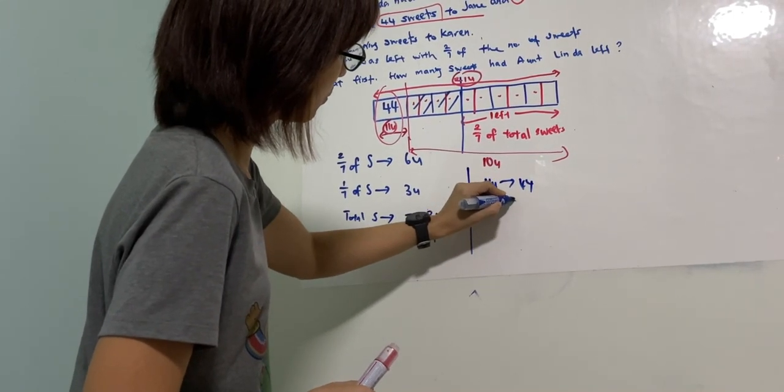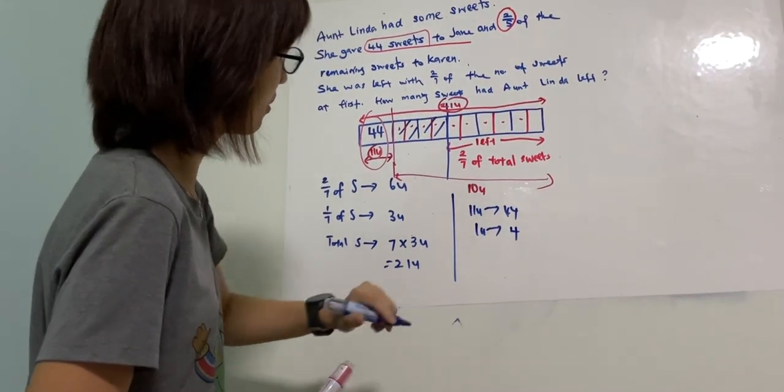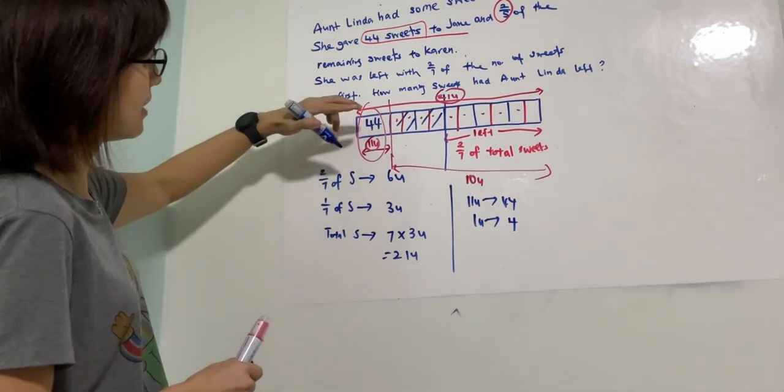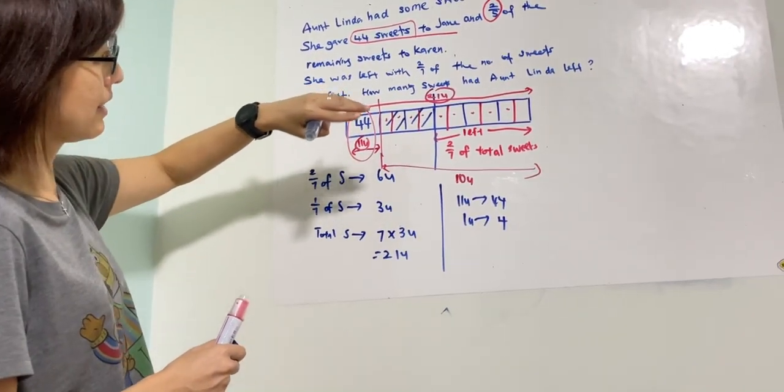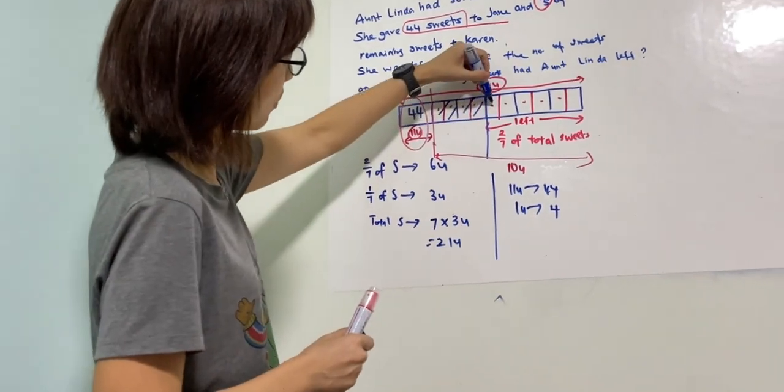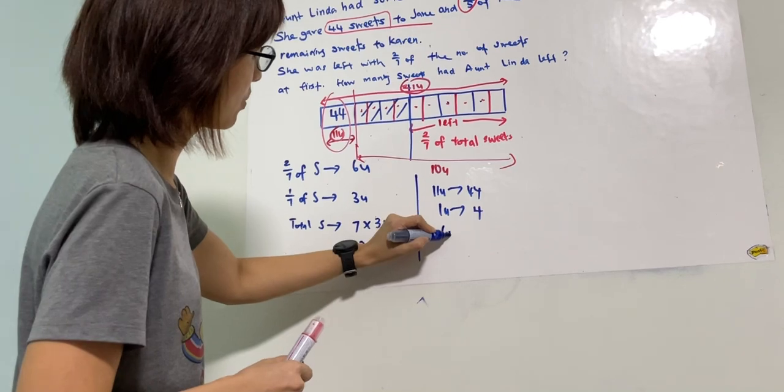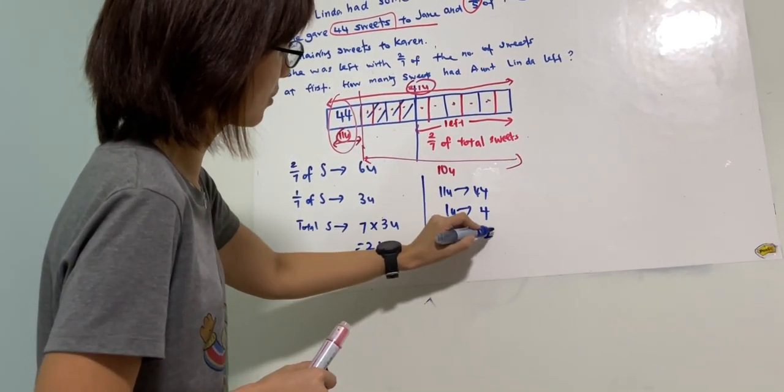So one unit would be 44 divided by 11, which gives us 4. So how many sweets does Aunt Linda have left? Aunt Linda would have one, two, three, four, five, six units left, so six units would make 24.